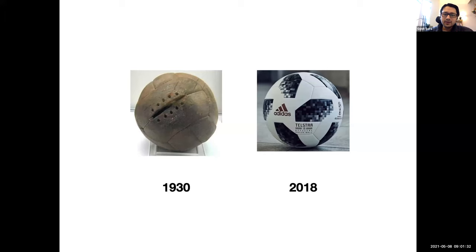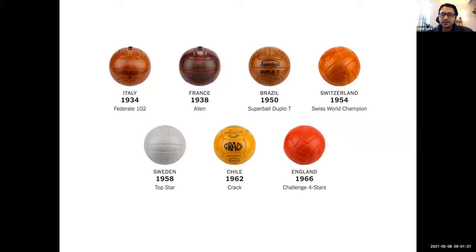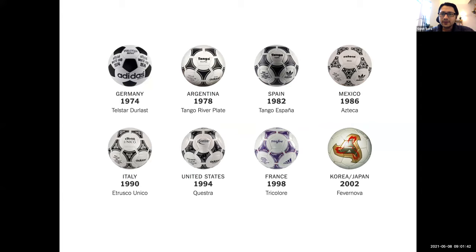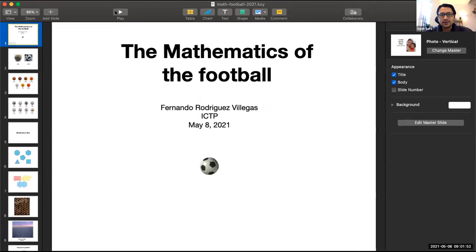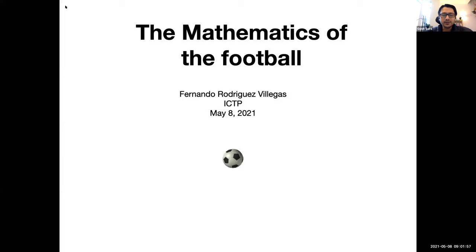Welcome everyone to this webinar. Today we have Professor Fernando Villegas from ICTP in Trieste, Italy. Professor Villegas is a senior research scientist at the International Center for Theoretical Physics. He did his initial studies in mathematics in Argentina, then moved to Ohio State University for his PhD. Prior to joining ICTP, he held positions at the Institute for Advanced Study, Princeton University, and the University of Texas at Austin. He is widely known for his work in number theory, geometry, and combinatorics, and has won several distinguished fellowships and awards. Today he will speak about the mathematics of the football.